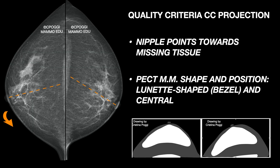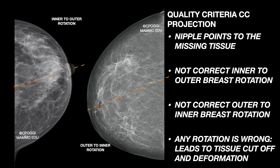Let me clarify with an example I often show to my students. Right CC with a slight rotation lateral to medial, but not enough to lose much tissue of the inner quadrant — the muscle is central and lunette-shaped. On the left CC, the medial-directed rotation is more important and a bit of deep inner quadrant is lost; the muscles are shifted sideways and take the form of a fan, as in an exaggerated CC. The nipple points to the missing tissue: where rotation has led to important tissue cut-off, you see it laterally here, medially here.